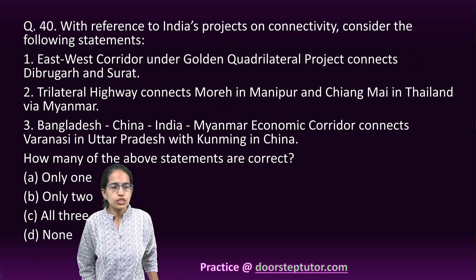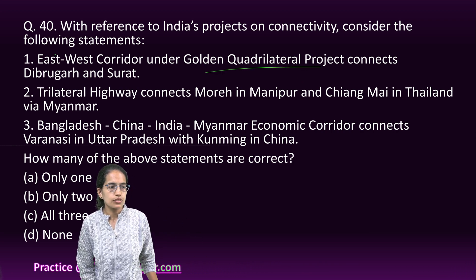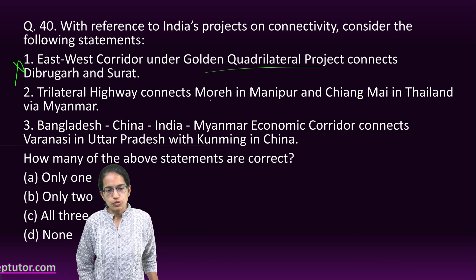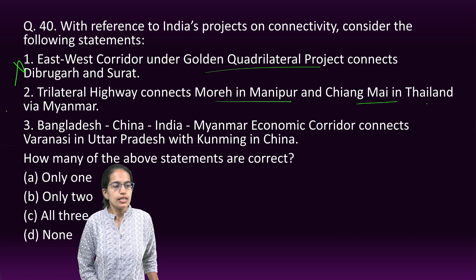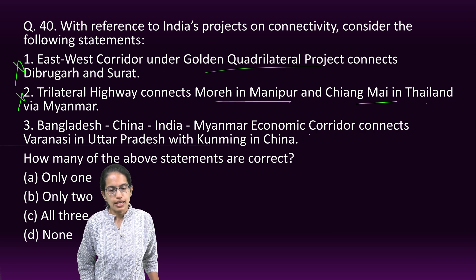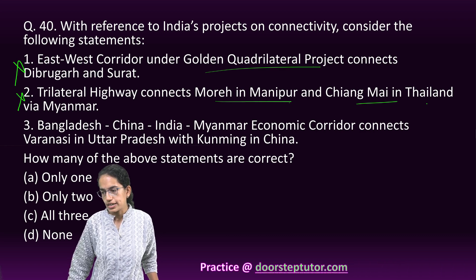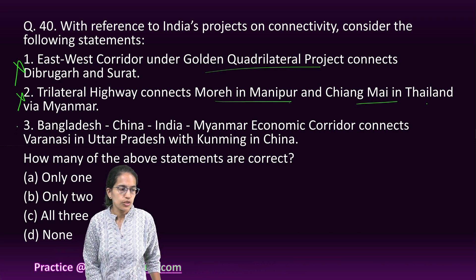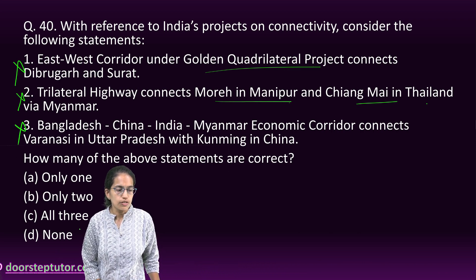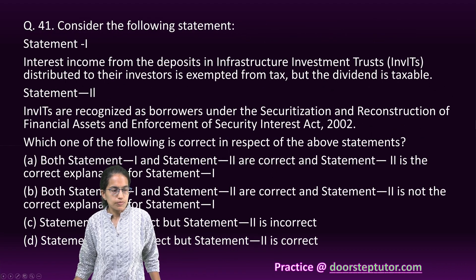On connectivity corridors: The East-West Corridor under the Golden Quadrilateral connects Silchar to Porbandar — but the statement as given is incorrect. The Trilateral Highway connects Moreh in Manipur to Mae Sot in Thailand — not as described. The Bangladesh-China-India-Myanmar Economic Corridor connects Guwahati, Kolkata, and Chennai in India — not Varanasi. So none of the given options is correct.